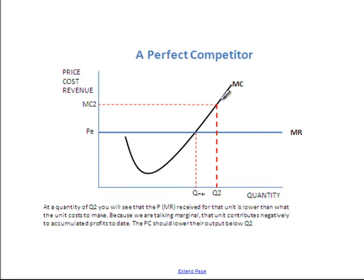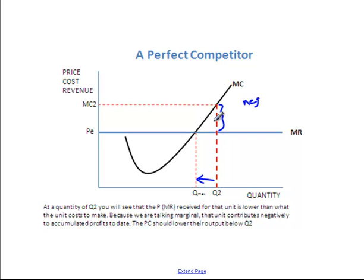Now let's have a look at the position above Q max. At Q2, which is a random quantity above the maximizing position, you'll notice that the cost of making that unit is higher than the price they get for it. So that unit contributes negatively to profit, and so the firm shouldn't make that unit. The same is true for all units beyond Q2 — the marginal cost is above the marginal revenue, so each of those units takes away from whatever profit they've made up to that point.